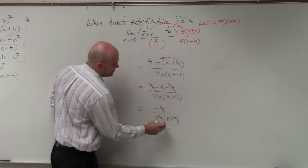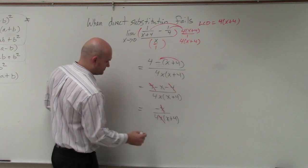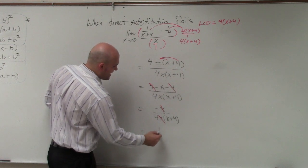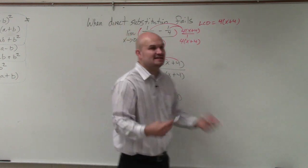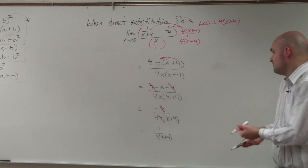Now my x's divide out. So it's leaving me with a negative 1 over 4 times x plus 4. And again, we don't need to distribute. I mean, you can distribute it, but we don't really need to.